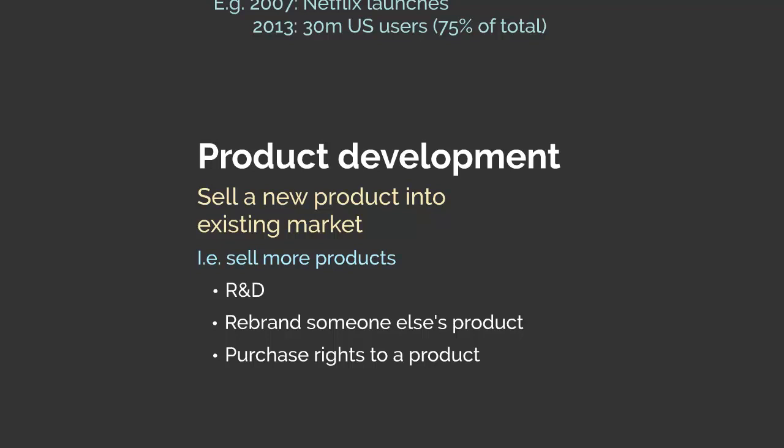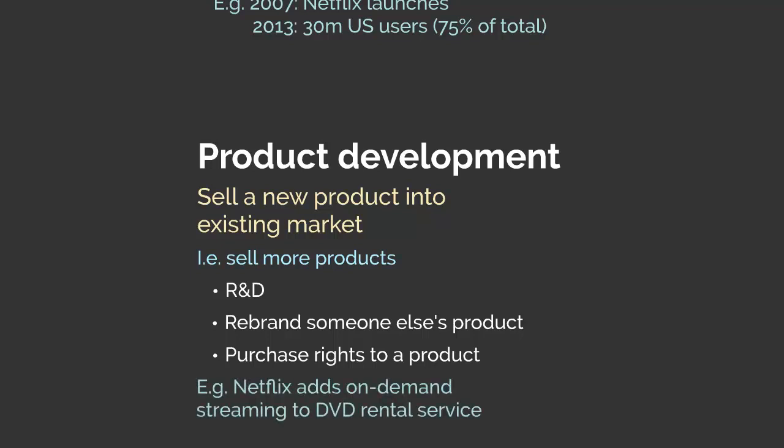Alternatively, entities could simply purchase the rights to a product and sell another company's product into their market, drawing on their strength of knowing that market well. For Netflix, their initial product offering was DVD rental via mail order, and it was only in 2007 that on-demand streaming was created as a new product. Their existing customer base — those familiar with Netflix's original products — were a useful initial market for the streaming service.